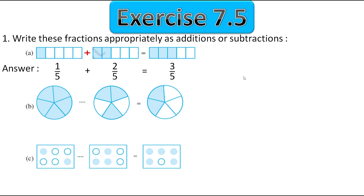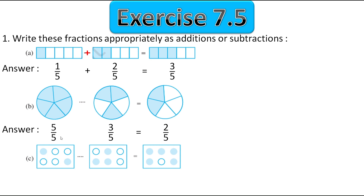In the second one they have given some circles with 5 parts. First we will write the fractions. The first circle has all parts shaded, so the fraction is 5 upon 5. The second circle has three parts shaded out of 5 parts, and here two parts are shaded out of 5 parts. The denominator is kept as it is. When we subtract 3 from 5, 5 minus 3 gives 2. Therefore the operation is subtraction, so the minus sign will come.